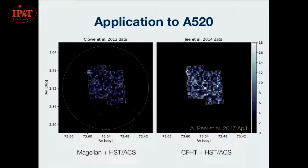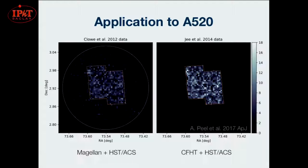Moving on to the actual A520 data: we got the lensing catalogs from the Clo 2012 and the J14 separate studies. They came from some of the same data but also separate ground-based data. This shows the number count of the galaxy distribution, and you can see by eye that there are some differences, which is essentially due to different reduction pipelines of the two groups resulting in different galaxy catalogs.